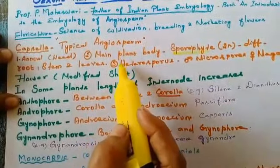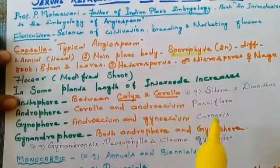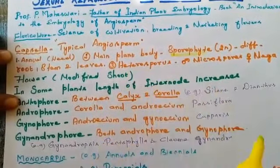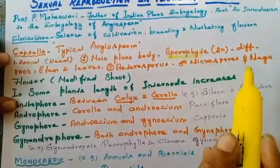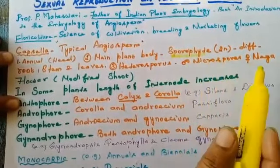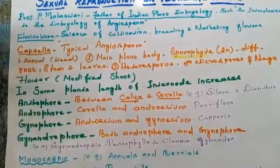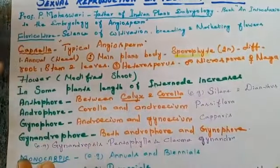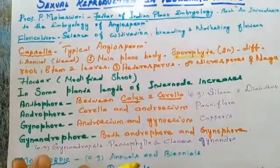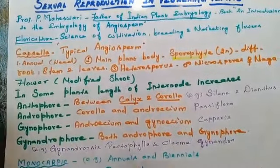Capsella is heterosporous. What is meant by 'hetero'? Two different. Sporous — spores. So, Capsella produces two types of spores: male spores and female spores. The male spore is called microspore and the female spore is called megaspore. Capsella possesses all these angiospermic characters, so it is said to be a typical angiosperm.